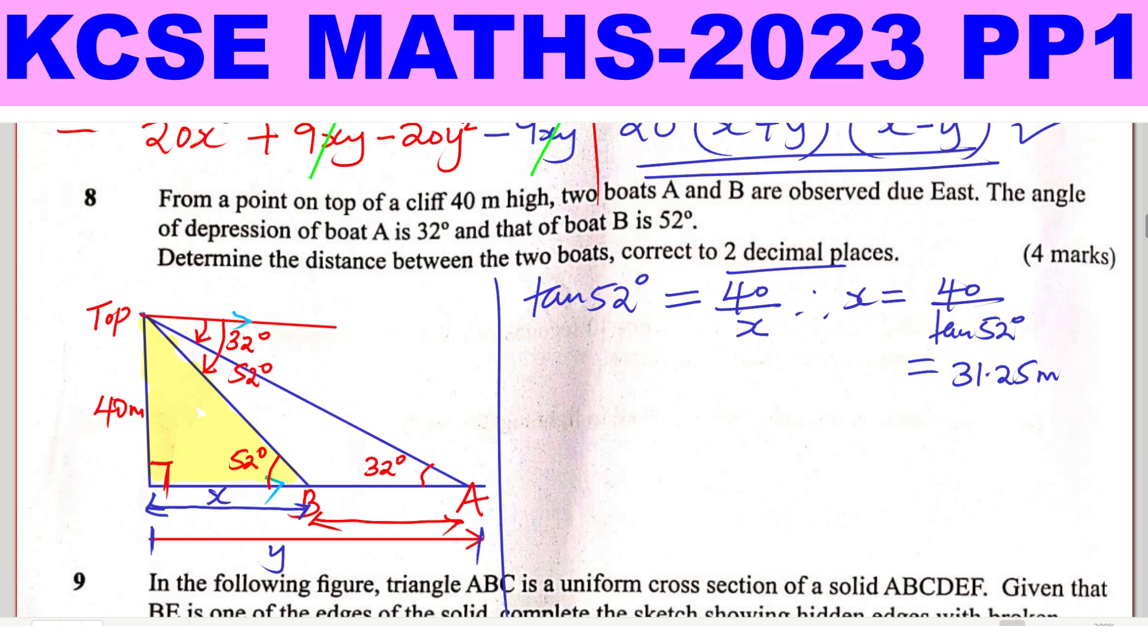Then we have now the bigger triangle, the bigger triangle with the base Y. So we take this angle, 32. So tan of 32 degrees is equals to the opposite side is still 40, but now the adjacent is Y, the whole of that length is Y. So this one will be able to get Y. We make Y the subject by multiplying both sides by Y and then dividing by tan 32. So Y will be given by 40 divided by tan 32 degrees. And this one working out using a calculator you get 64.01 meters.